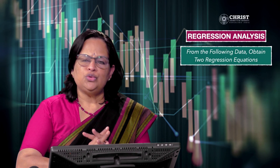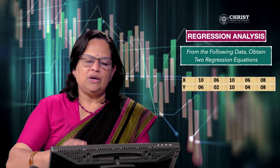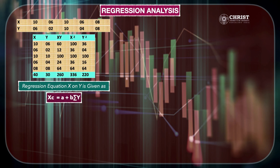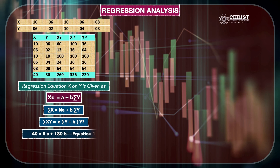Now we will do a problem. From the following data, obtain two regression equations. Values of X: 10, 6, 10, 6, and 8. Values of Y: 6, 2, 10, 4, and 8. We have computed a table with X, Y, XY, X², and Y² values. For regression equation x on y, Xc = a + bY. The two normal equations give us: 40 = 5a + 30b (equation 1), and 260 = 30a + 220b (equation 2).